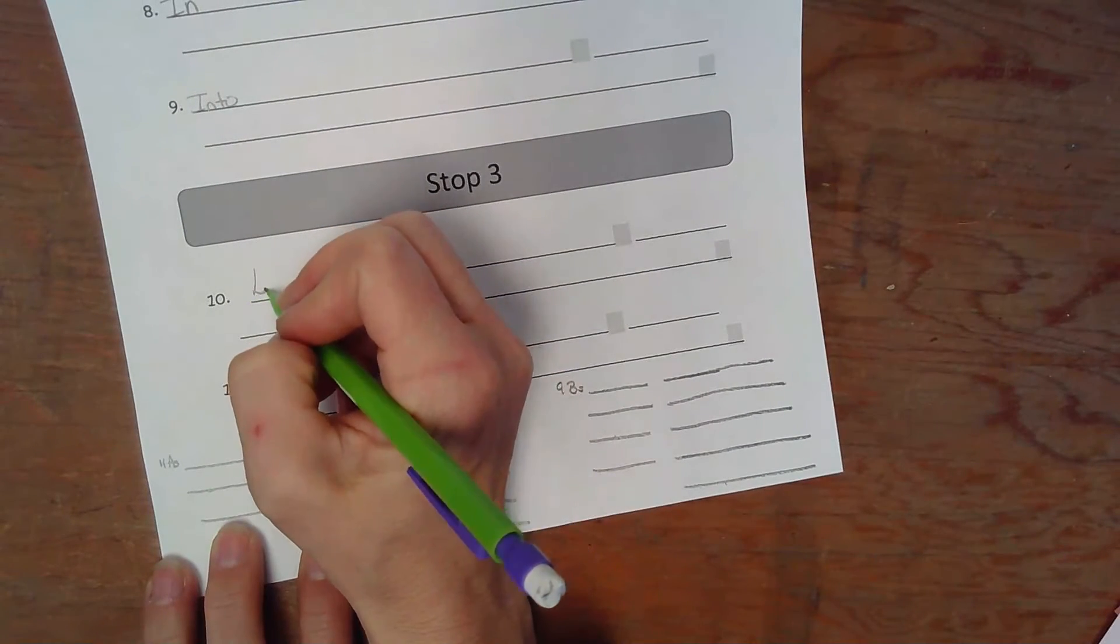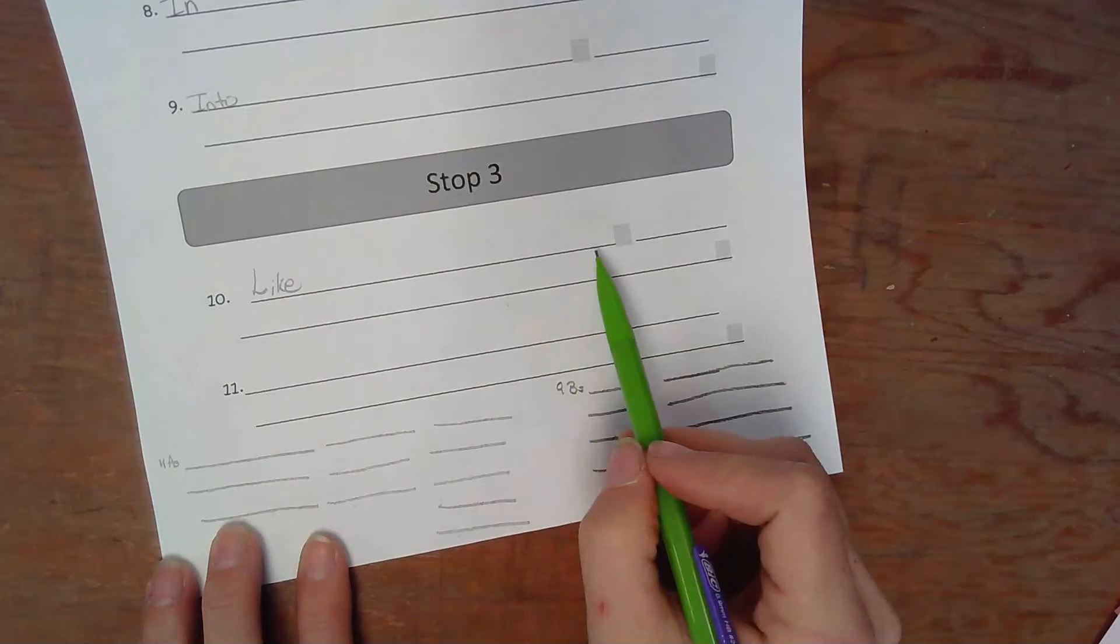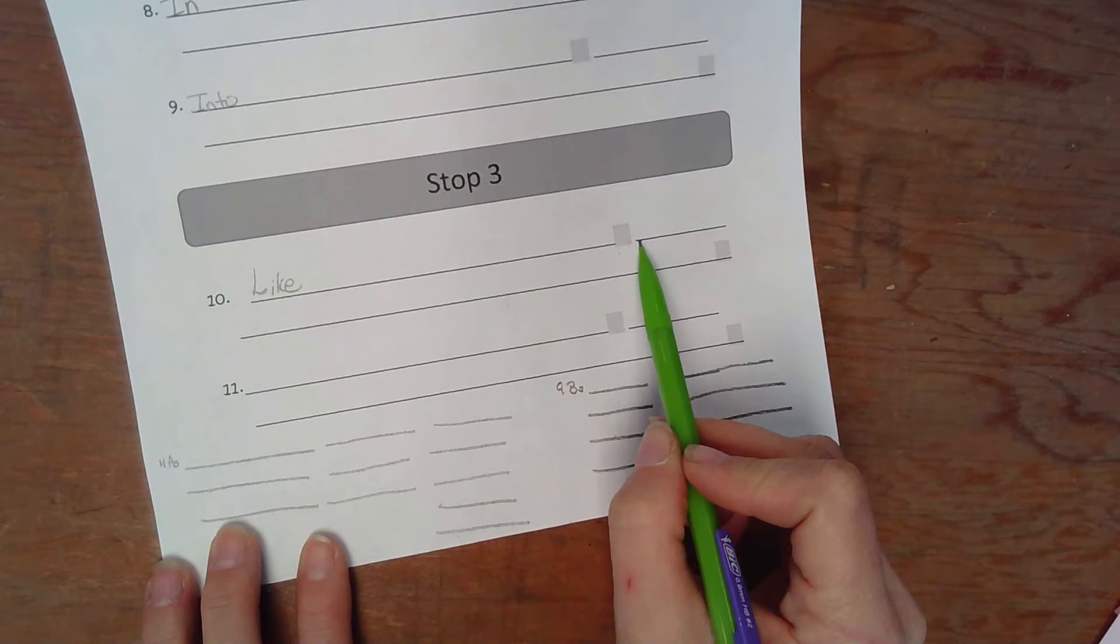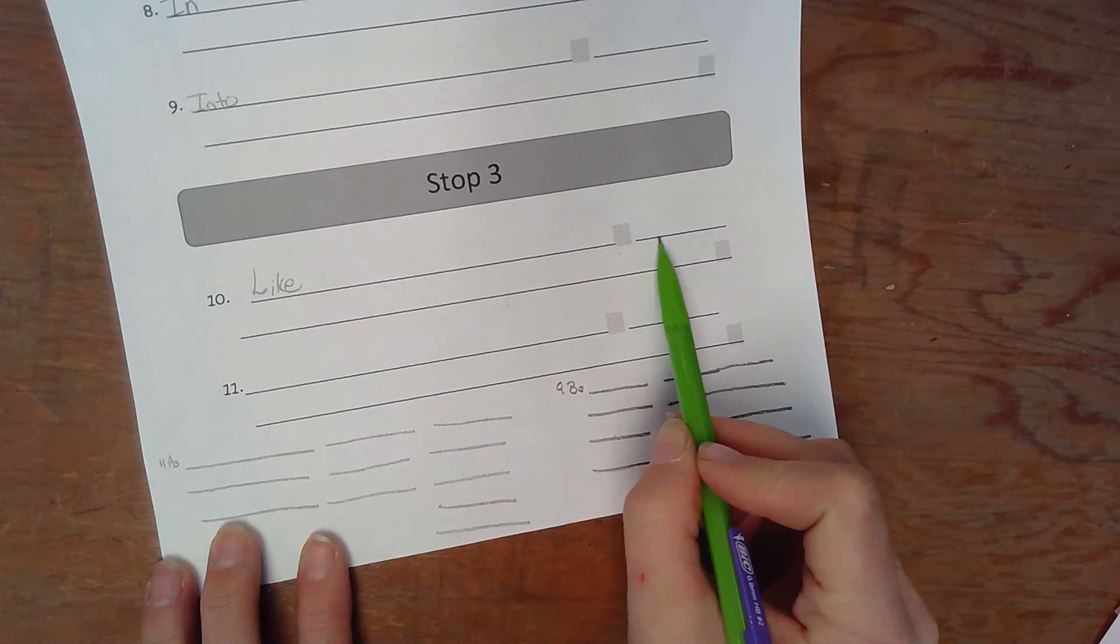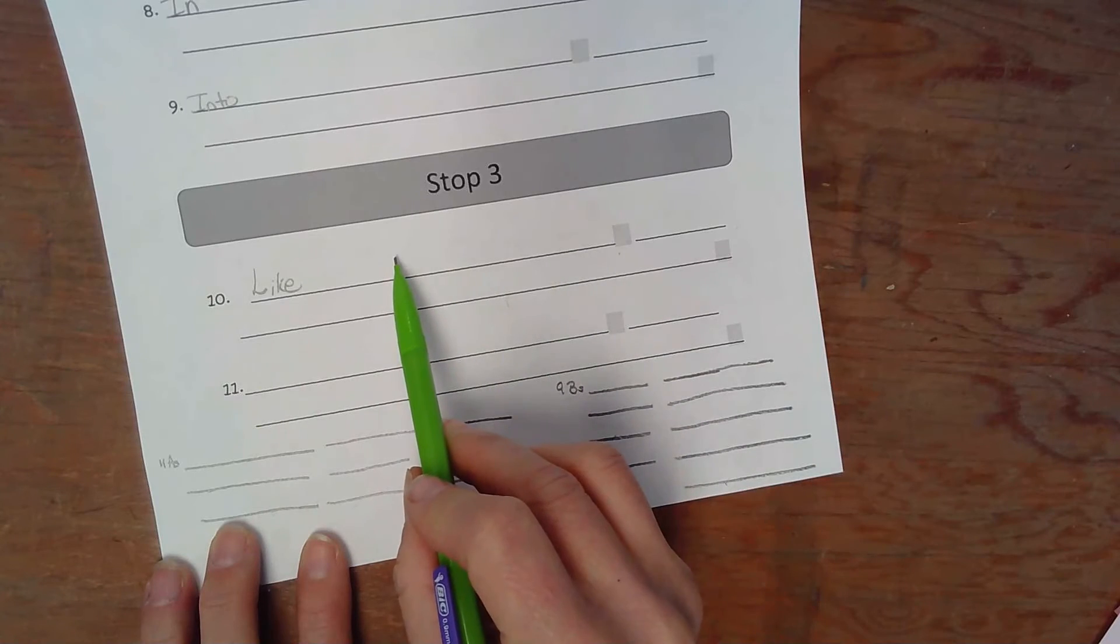So like, and then describe how something looks, like, comma, and then how does someone do something in that way?